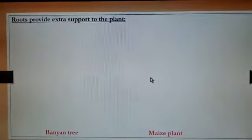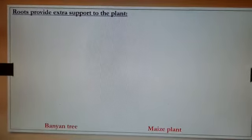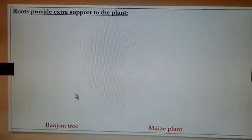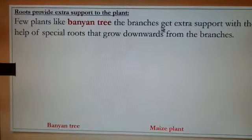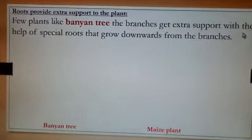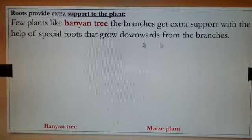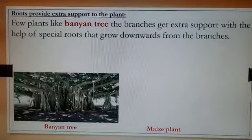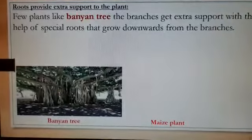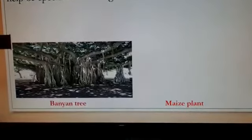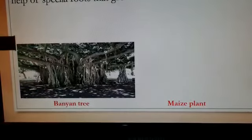Some roots provide extra support to the plant. In the banyan tree, the branches get extra support with the help of special roots that grow downwards from the branches. As you can see in the picture, the long branches of the banyan tree have roots growing downwards, giving extra support to the plant.